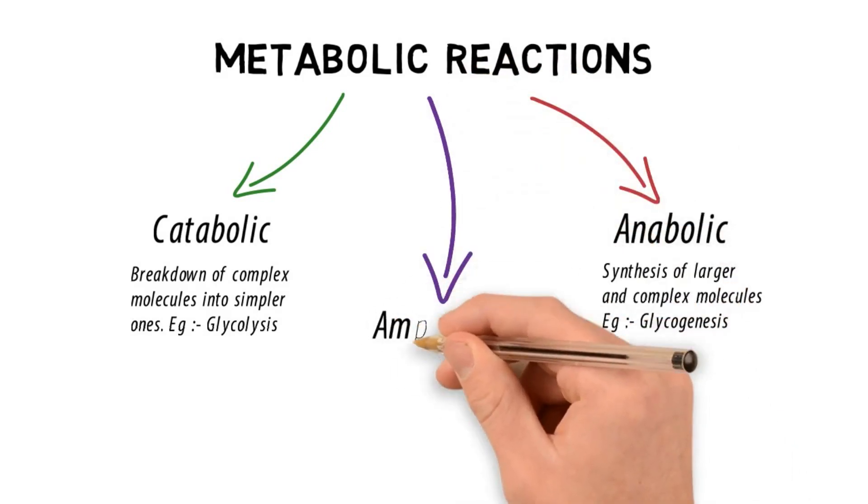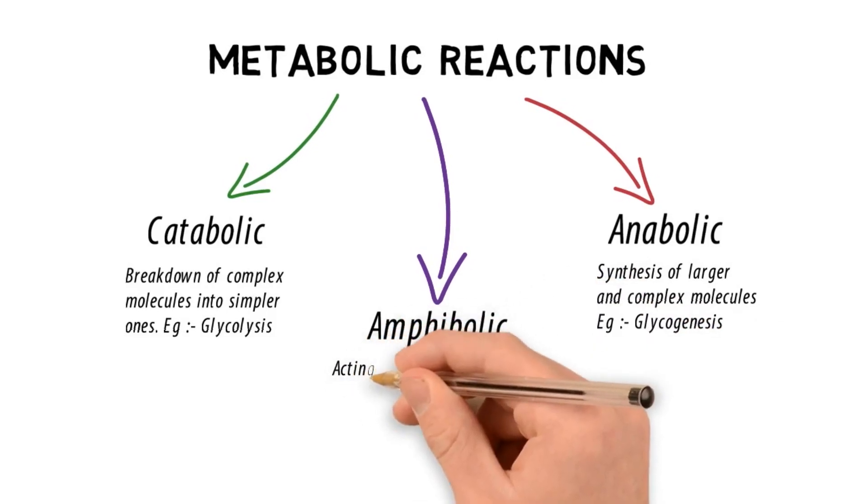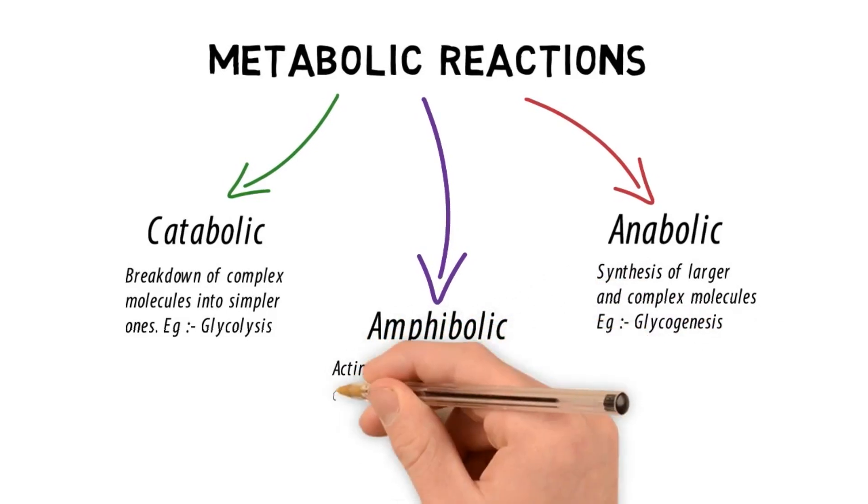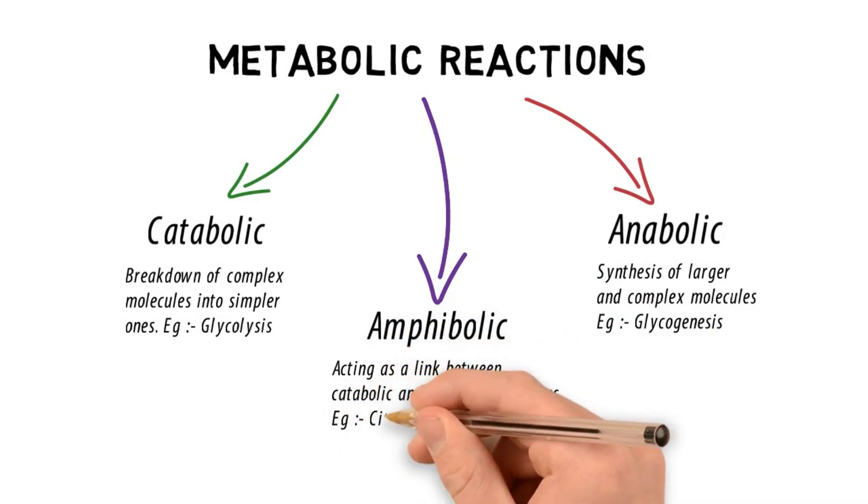A third one being the amphibolic pathway, which basically acts as a link between the catabolic and anabolic pathway. A very good example of this is the citric acid cycle.